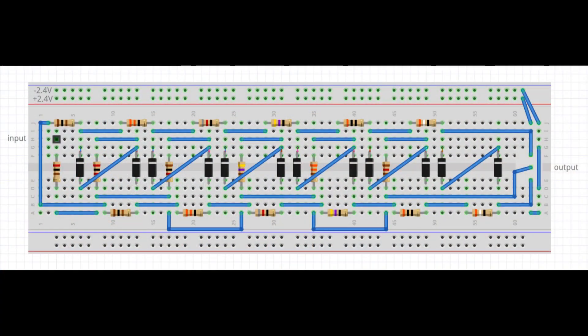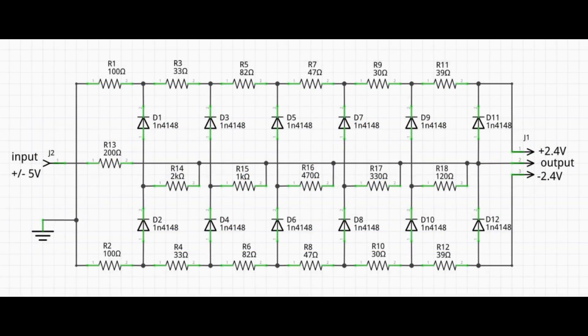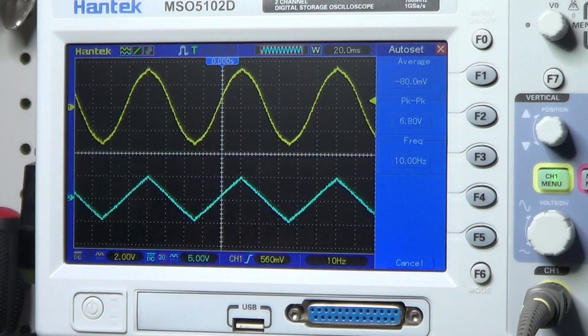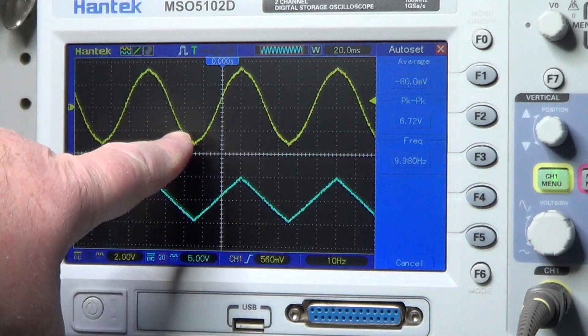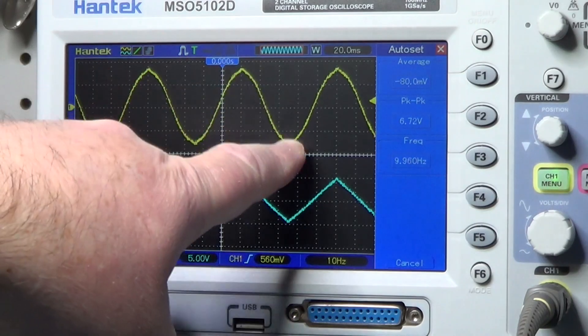Fortunately, there is a whole category of devices that can help on that, and they are in fact called wave shapers. Today we will concentrate on a particular shape, one that can convert a triangular wave into a sine wave. Let's get into it!